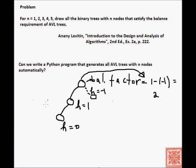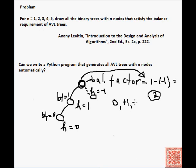The AVL balance requirement requires that each and every node in the binary tree has a balance factor equal to zero, minus one, or plus one. So in our example, the balance factor of the leaf is zero, the balance factor of the middle node is one, but the balance factor of the root is two — so this is not an AVL tree. In an AVL tree, to reiterate, the balance factor of each and every node must be equal to zero, plus one, or minus one. Otherwise, it's not an AVL tree.